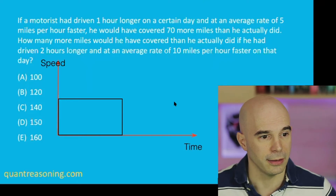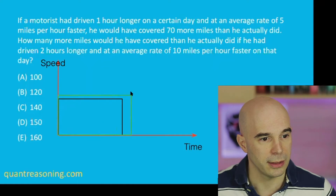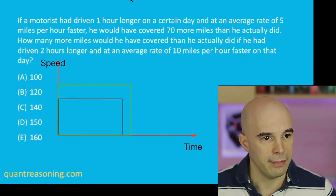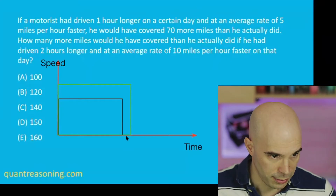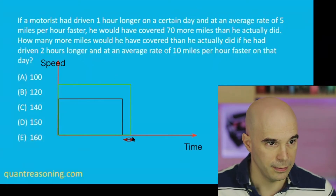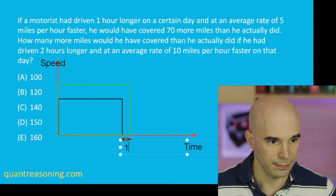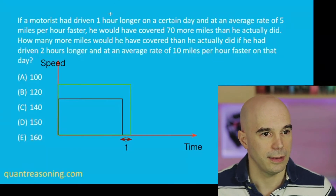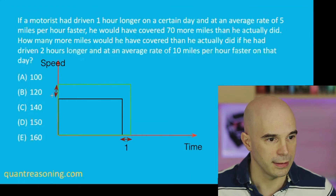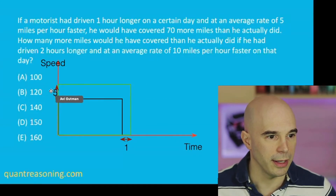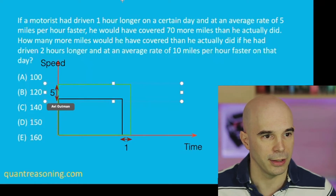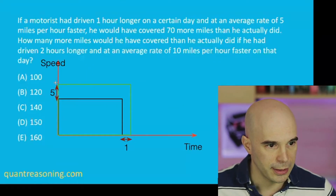I'm going to draw another rectangle for hypothetical situation number one. The difference in time is one hour, and the difference in speed is five miles per hour. We are told that that extra area — when we highlight it — is apparently 70.